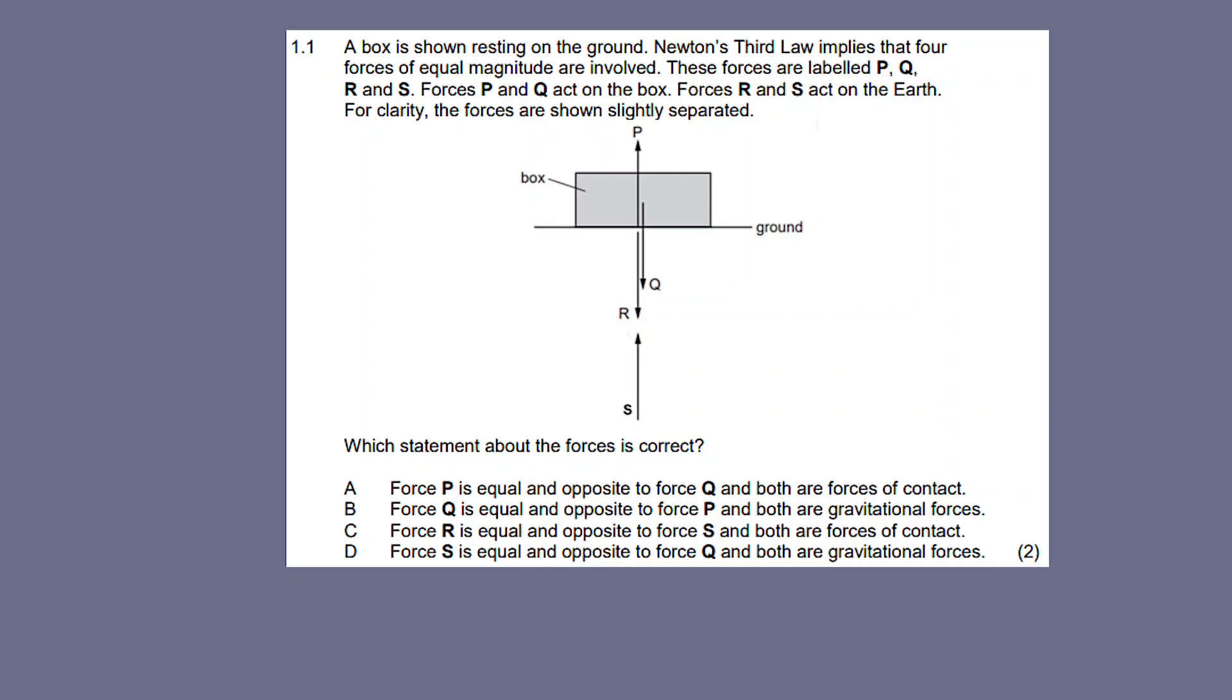Multiple choice. Now a box is shown resting on the ground. Newton's Third Law implies that four forces of equal magnitude are involved. These forces are labeled P, Q, R, and S. Forces P and Q act on the box.